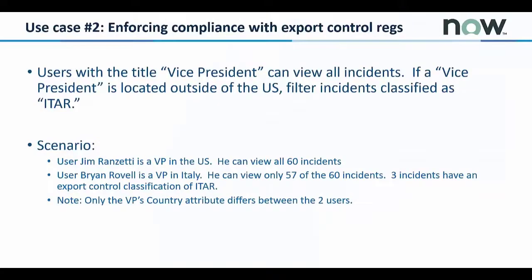In use case number two, we demonstrate control of access based on a user's title and location. In our example, vice presidents should have access to view all incidents unless they are located outside of the United States. In that case, any incidents classified as having ITAR data should not be viewable, even for a user who is a vice president. In an actual deployment, other attributes about the user, such as their citizenship or the country of incorporation for the company they work for, could be utilized in our policies. Also, exceptions may be made to a policy if, for instance, an export control license, or ECN, has been issued to authorize access to view ITAR incidents — that's International Trade in Arms Regulation incidents — by users who would otherwise be denied access.